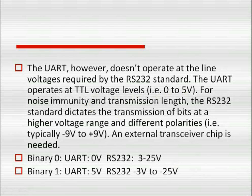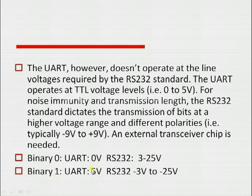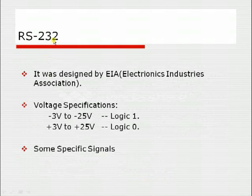UART supports TTL voltage levels of 0 to 5 volts. If you want to increase the transmission length, noise gets introduced into the channels. To reduce noise, a protocol called RS232 is used. RS232 represents data bits with higher voltage levels, so the transmission length can be increased. In UART, binary zero is represented by 0 volts, whereas RS232 represents binary zero with a voltage between +3 to +25 volts. Binary one is 5 volts in UART, while RS232 represents binary one with a voltage between -3 to -25 volts.